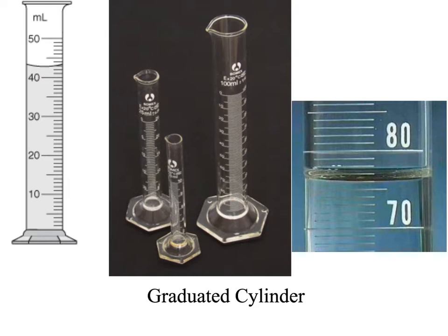I'd estimate one decimal place, so that'd be 43.0. Over here you can see the 70 and 80 lines — 75 is right there — so I'd call that 76.1 milliliters. That's the function of the graduated cylinder.